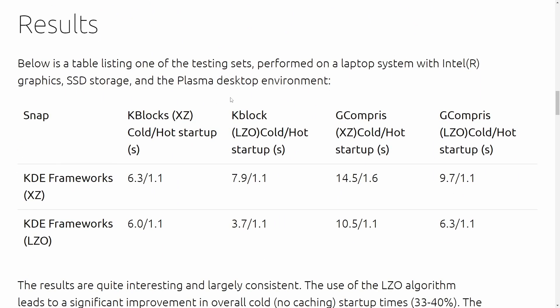Below is a listing of table tests performed on a laptop — nothing special, no 100-core CPU with the latest graphics card, just plain Intel graphics and an SSD running the Plasma desktop environment. They look at snap packages and various KDE frameworks compressed with XZ versus LZO. The slash between values means cold startup on the left and hot startup on the right, measuring startup time in seconds. The first app is K-Blocks, a classic falling blocks game much like Tetris.